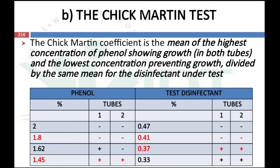The observations of the Chick-Martin test use phenol concentrations of 2%, 1.8%, 1.62%, and 1.4%, and different dilutions of the test disinfectant: 0.47, 0.41, 0.37, and 0.33. A plus sign indicates the presence of microorganism and a minus sign indicates absence due to killing by that dilution, after 30 minutes of reaction time at 20 to 30°C.